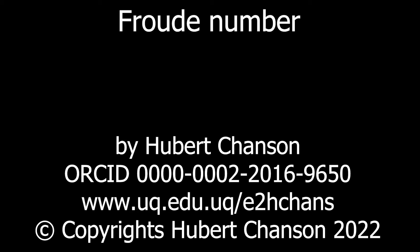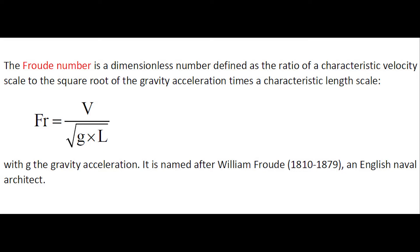The Froude number is a dimensionless number, defined as the ratio of a characteristic velocity scale to the square root of the gravity acceleration times a characteristic length scale. It is named after William Froude, an English naval architect.